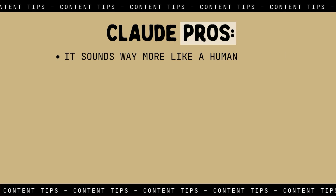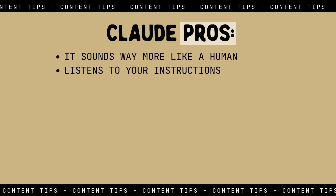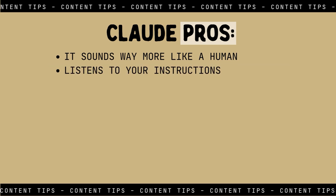Getting into some pros and cons about using Claude for content creation: the first pro — and this is something I've heard across the board from peers in my industry — is that automatically, without giving it a ton of instruction, Claude sounds way more like a human. The output sounds a lot friendlier, a lot less robotic. And when I give it very specific instructions, it tends to listen a little bit better than ChatGPT. For example, with ChatGPT I could tell it 'don't include hashtags, don't include emojis,' and the output will still include hashtags and emojis.